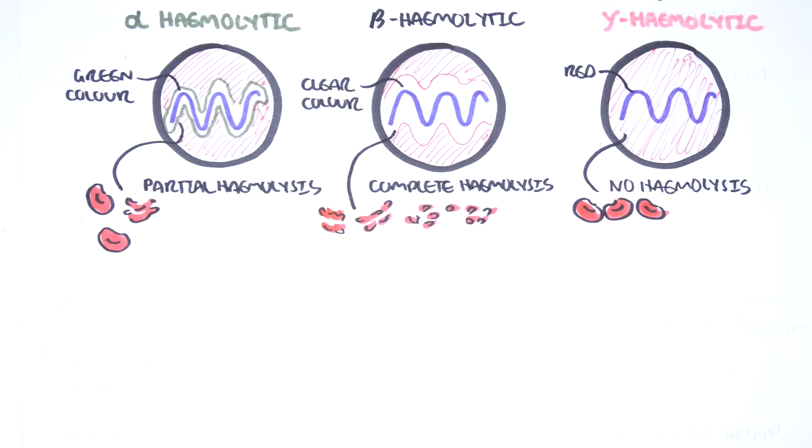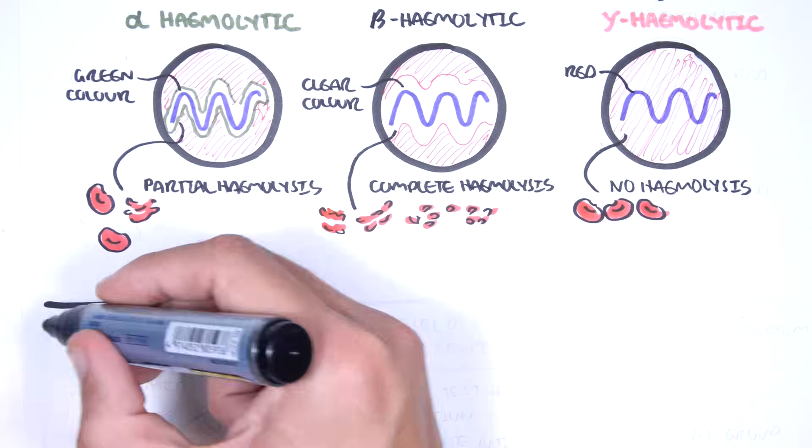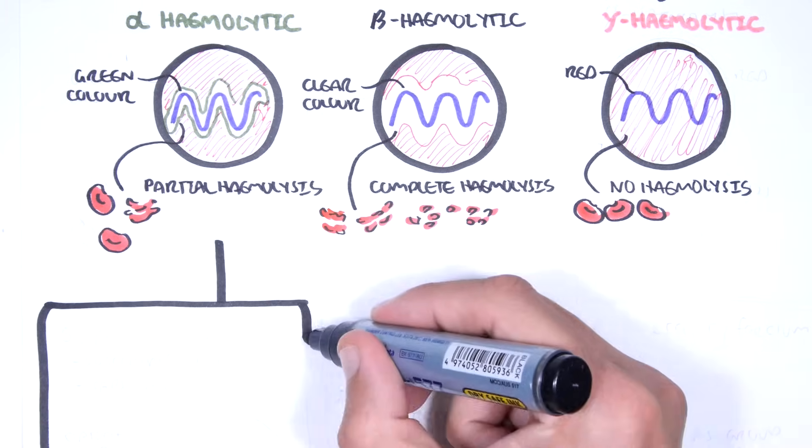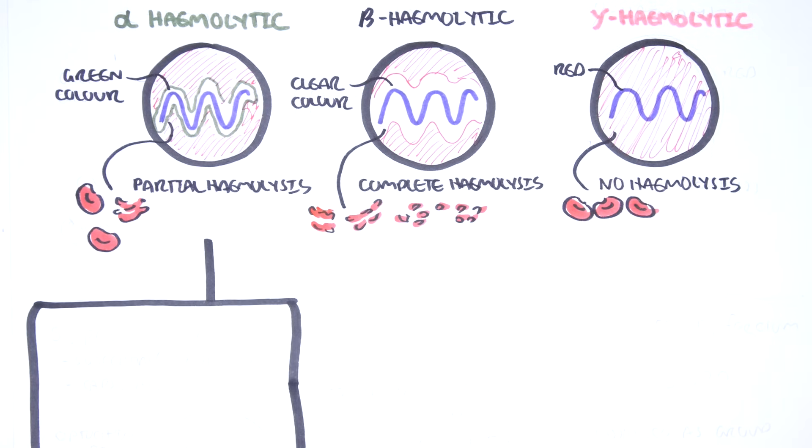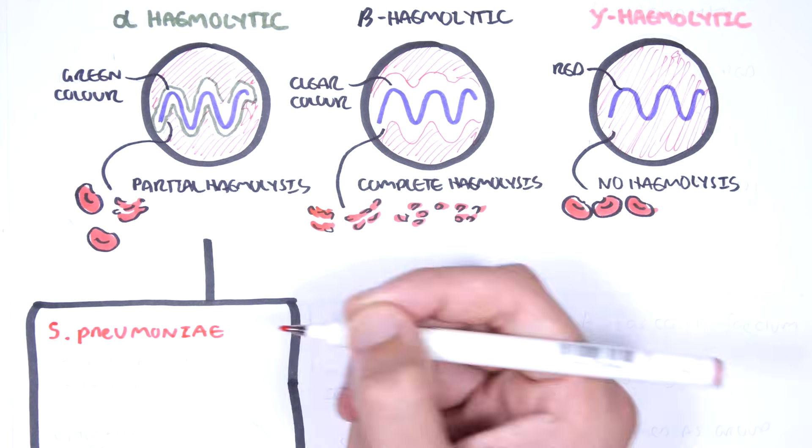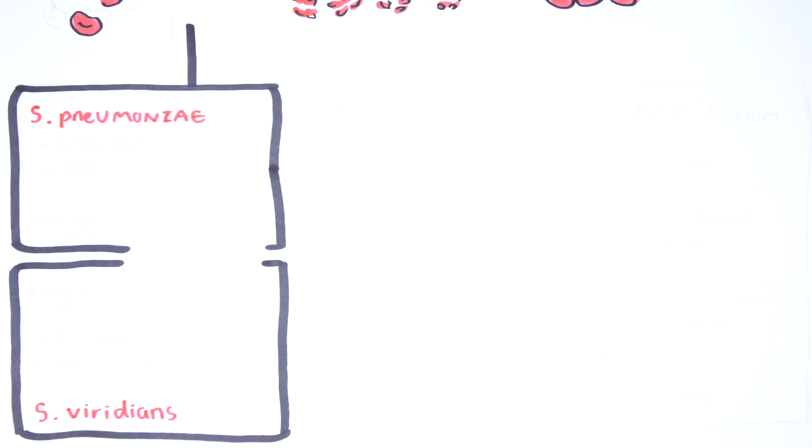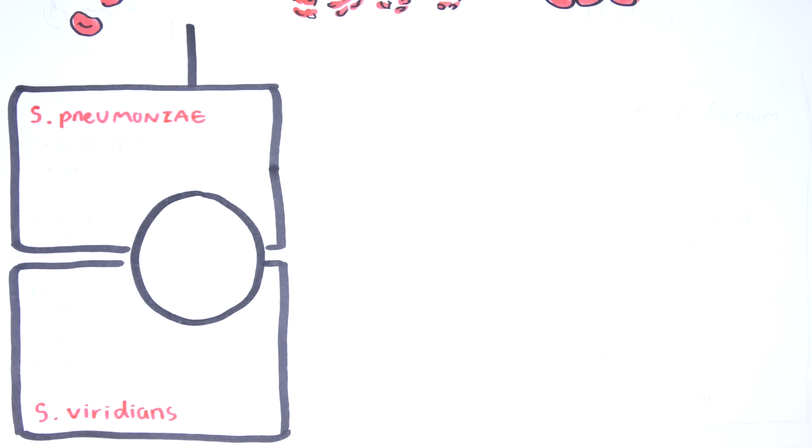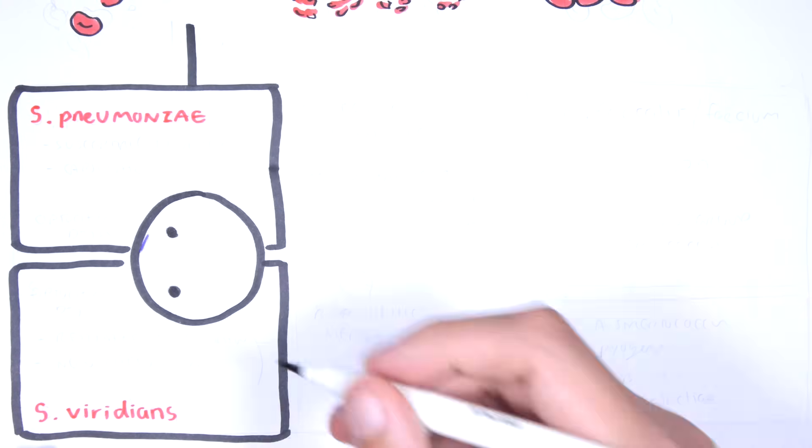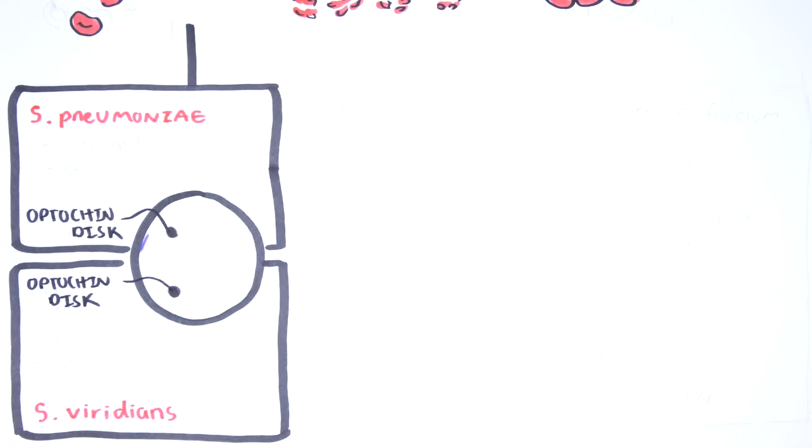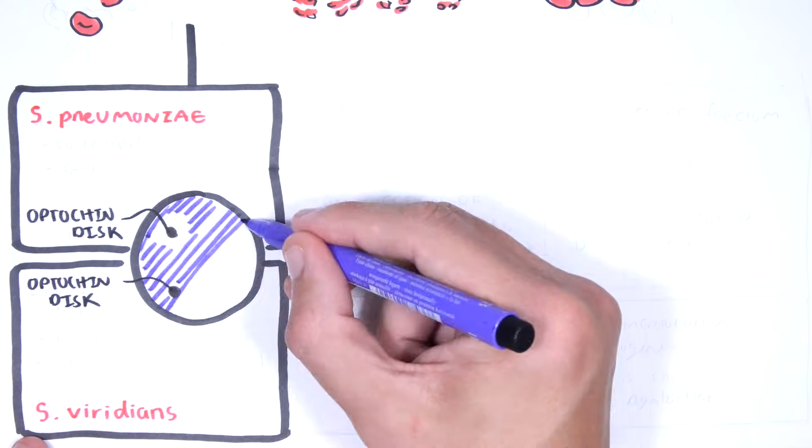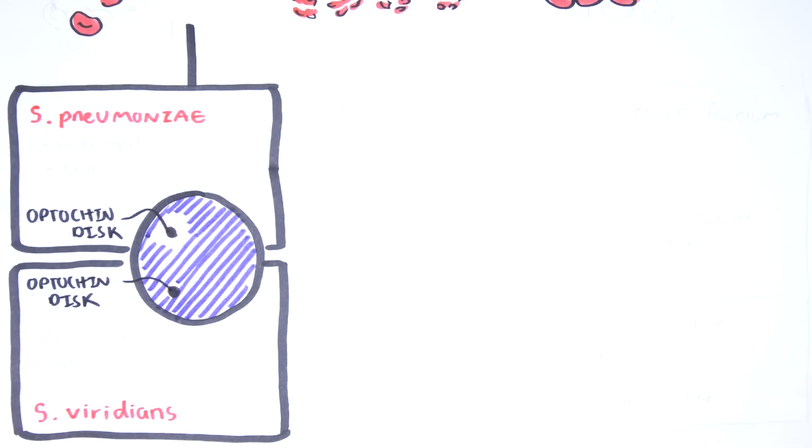Once the hemolytic properties of the streptococcus species is identified, this narrows the type of streptococci. For example, the two main alpha hemolytic streptococci are streptococcus pneumoniae and streptococcus viridians. The two bacteria can be further differentiated by smearing the alpha hemolytic streptococci in a medium with an optochin disc. Optochin is a derivative of quinine. You don't need to know anything more about it.